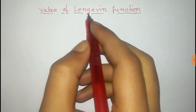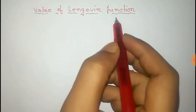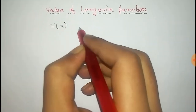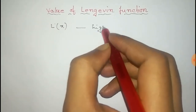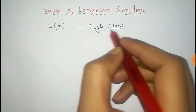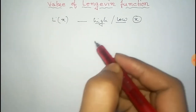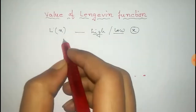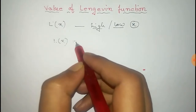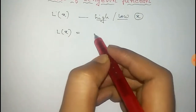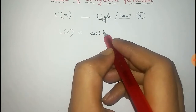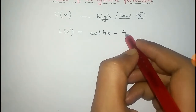In this video, we will find the value of the Langevin function L(X) for high and low values of X. The Langevin function L(X) is generally given by coth(X) minus 1/X.